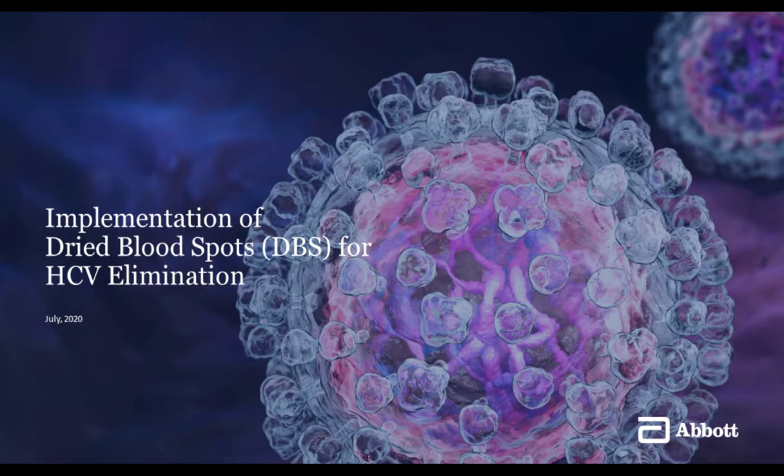Emmanuel, we have a two-part question: two-thirds of the sites observed false positives with DBS. Since HCV does not integrate into cells like HIV, proviral contamination would not be an issue. Could you comment on potential causes of these false positives and whether procedural steps could contribute to this performance?